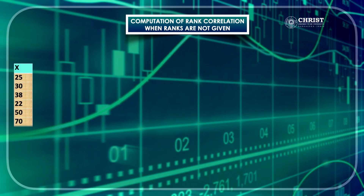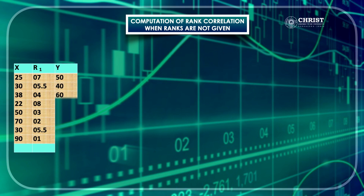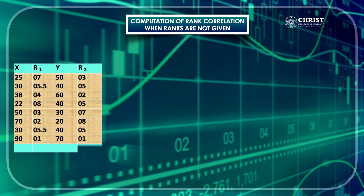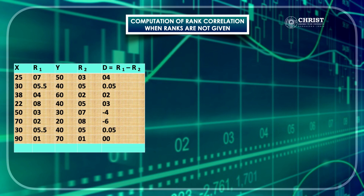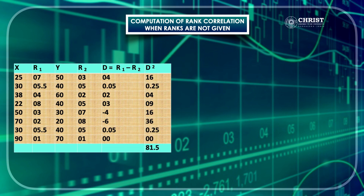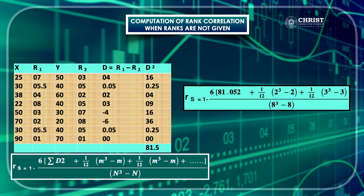Looking at the solution: x series ranks are assigned as R1 values, y series ranks as R2 values. Deviation R1 minus R2 is computed — some positive, some negative. The d² values are taken and the total is 81.5. For x series, 30 is repeated twice (m = 2), and for y series, 40 is repeated thrice (m = 3). So two correction factors are in the formula: (1/12)(2³ − 2) for x series and (1/12)(3³ − 3) for y series. Substituting the values, you get rank correlation coefficient as 0, meaning there is no relationship between marks in accountancy and marks in economics.